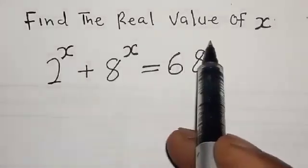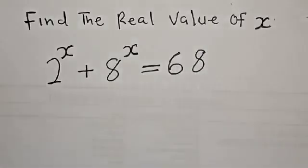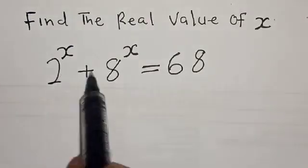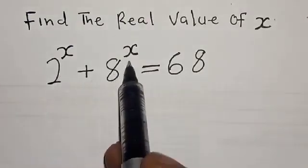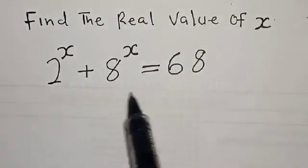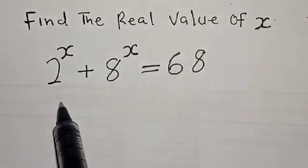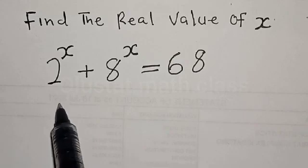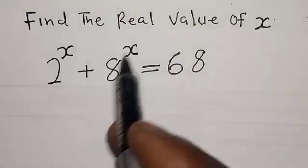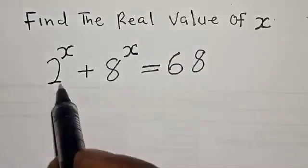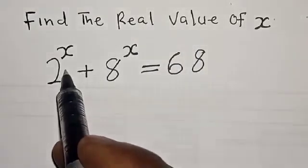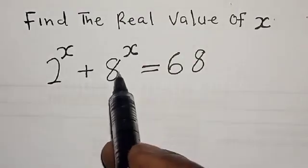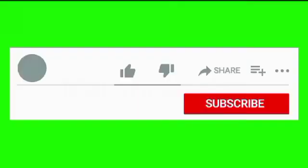Find the real value of x. 2 raised to the power x plus 8 raised to the power x is equal to 68. Hi everyone, welcome to my class. In this class, we want to find the real value of x from this given equation: 2 raised to the power x plus 8 raised to the power x is equal to 68.